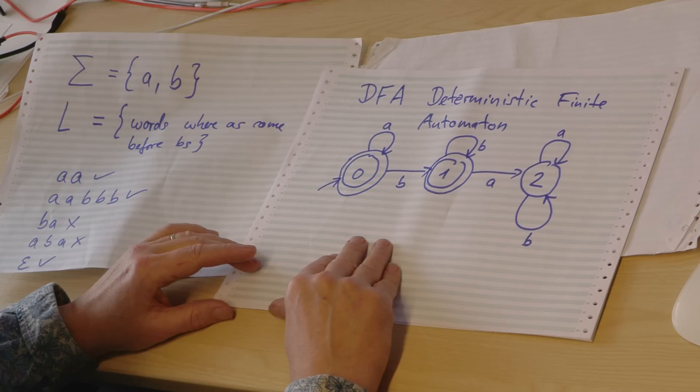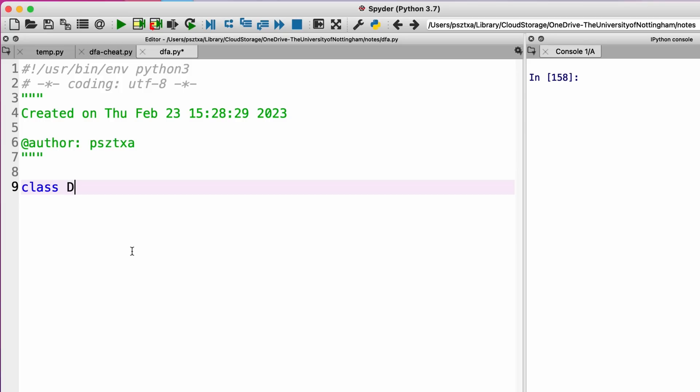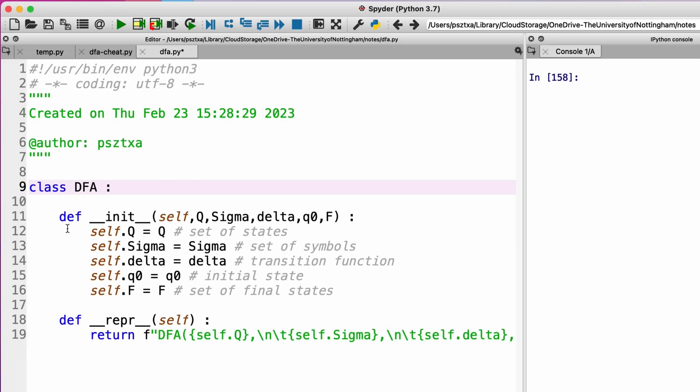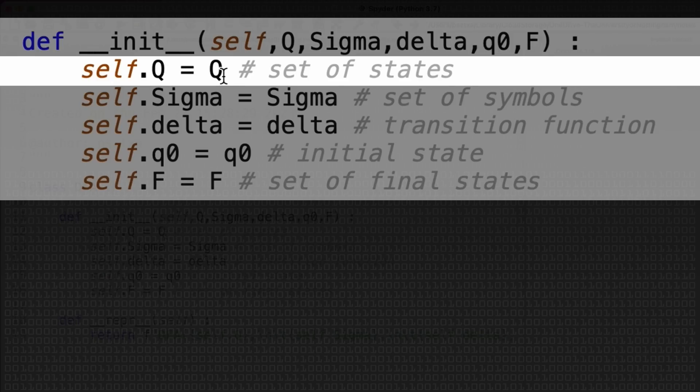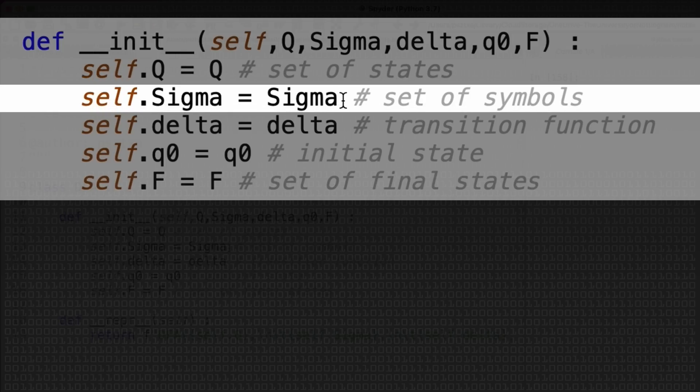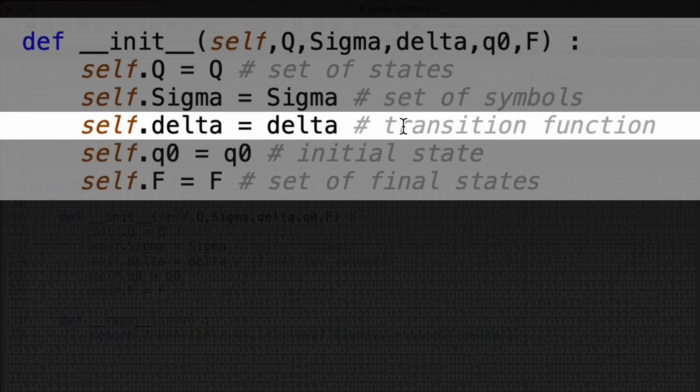So the language of this automaton is exactly what I wanted to describe - the words where the a's are coming before the b's. So here we are in Python and Spyder. I want to define a class of DFAs, and I do the usual boilerplate. So I define an init method, which says okay, what is a DFA? We have to have a set of states. I'm going to use the set type of Python. There is a set of symbols, which is called sigma. I don't know how to do Greek letters in Python - I think it's possible but I haven't figured it out.